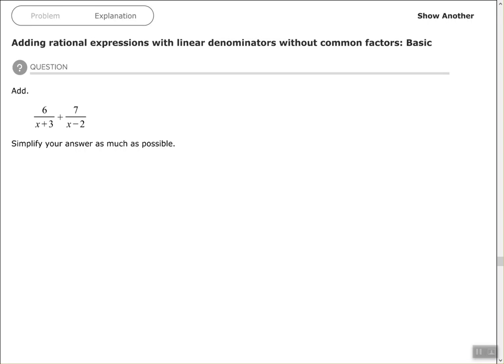Hey, good people, Arthur Morris here. Hope all is well. In this video we're going to look at adding rational expressions with linear denominators without common factors. We want to add 6 over x plus 3 plus 7 over x minus 2 and simplify the answer as much as possible.